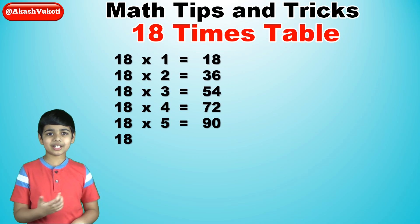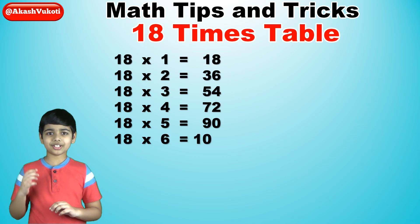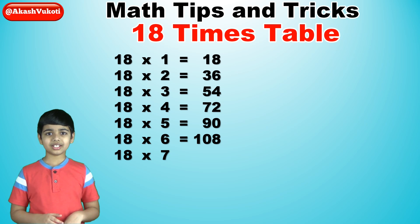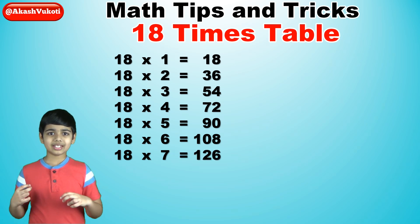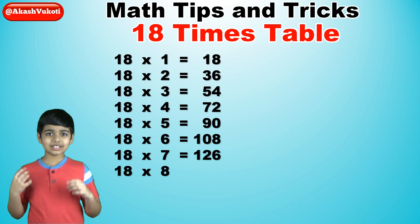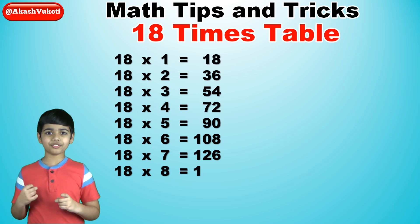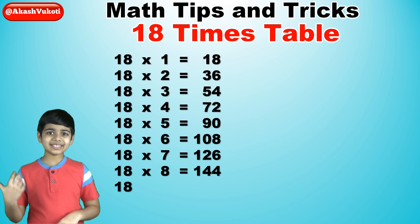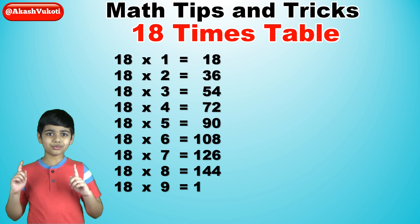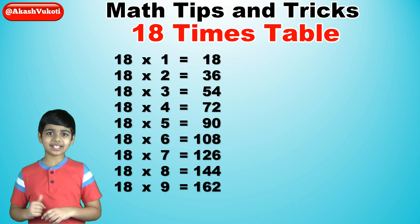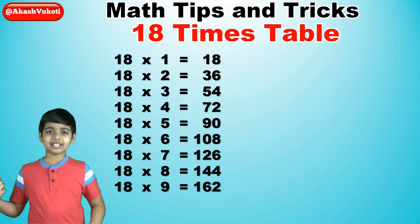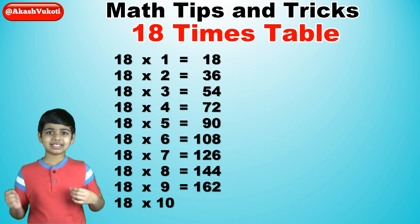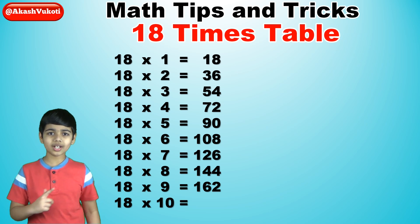18 times 6 is 108. 18 times 7 is 126. 18 times 8 is 144. 18 times 9 is 162. And finally, 18 times 10 is 108.